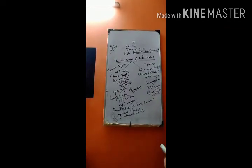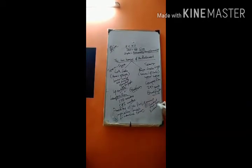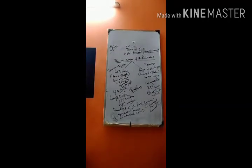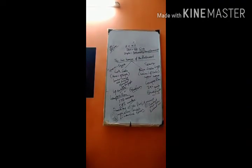The third power is control over the executive. Parliament controls the executive by asking questions and supplementary questions in the zero hour, by appointing joint parliamentary committees, by adjournment motion, by censure motion, by rejecting the budget or cut motion, and by passing a vote of no confidence. The power of no confidence is the exclusive prerogative of the Lok Sabha, and it is this power which makes the Lok Sabha more powerful than the Rajya Sabha.